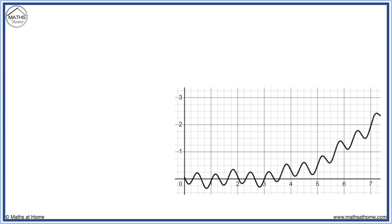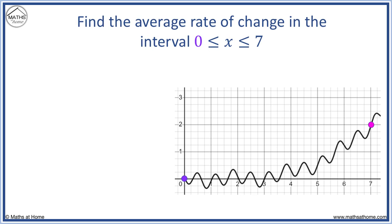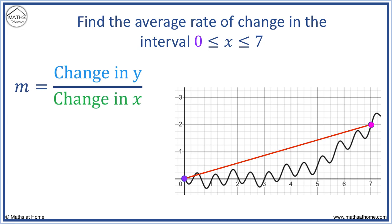In this example, we will find the average rate of change in the interval zero to seven. The average rate of change is shown by the gradient of the red line. The change in y between the two points is two. The change in x between the two points is seven squares long. The average rate of change is two over seven, which is approximately 0.286.